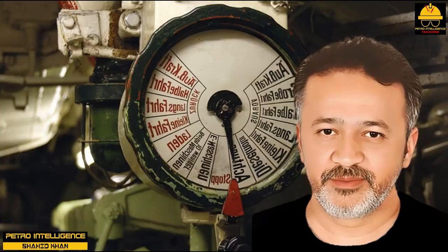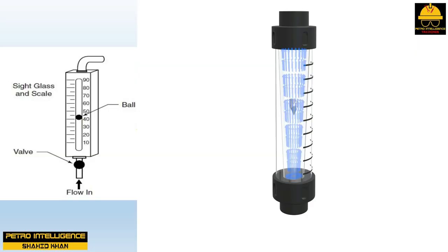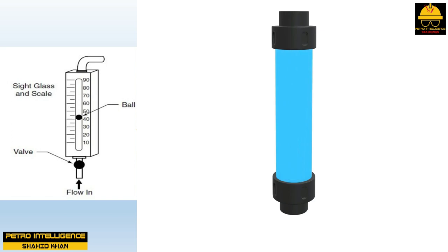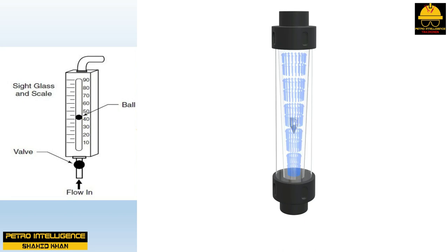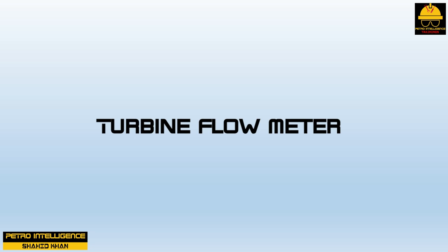A rotameter is another type of flow measuring device composed of a tapered tube, scale, ball or float, and inlet and outlet. During operation, flow enters the tapered tube at the bottom and lifts the ball off its seat. The ball provides a constant restriction to flow and corresponds to the flow rate on the scale running the length of the tube; the higher the flow rate, the higher the ball rises. Fluid flows around the ball and out the top of the rotameter.